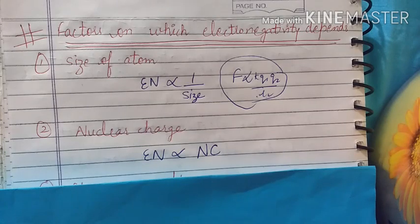Nuclear charge. Electronegativity is directly proportional to nuclear charge. The greater the positive charge in the nucleus, the greater the tendency to attract electrons, because opposite charges attract each other.